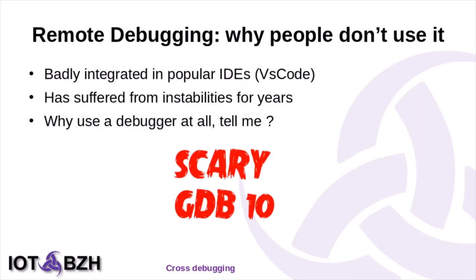In the past 15 years, I've often seen people that weren't using remote debugging. Some people were working on code that was not architecture-dependent and were able to reproduce their bugs on their host. Some others said that the debugger was badly integrated in popular IDEs like VS Code — and they were right. Also, GDB and GDB Server suffered from instabilities for years, leading to crashes or bad performance. Some people weren't using debuggers at all because they didn't trust them or could cope with bugs without them.